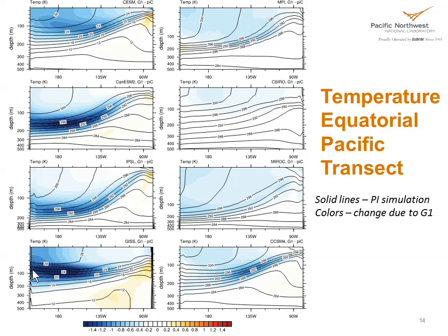You can see those changes in wind stress and in the surface currents having an impact on the thermodynamics as well. Here we're showing an equatorial Pacific transect of temperature. The black lines are the control simulation, essentially defining the thermocline for each model. You can see the differences in the thermal structure of the ocean for each of these models, with colors showing the intensity of the temperature change. What you're essentially seeing is a shoaling of the thermocline in the western part of the central Pacific.